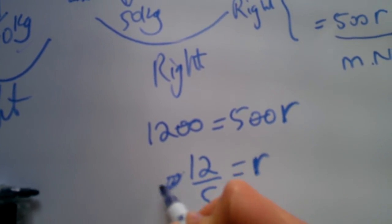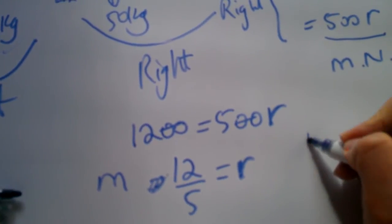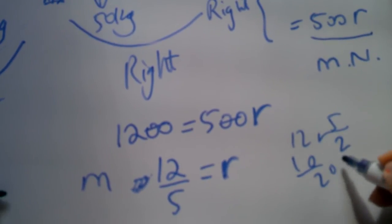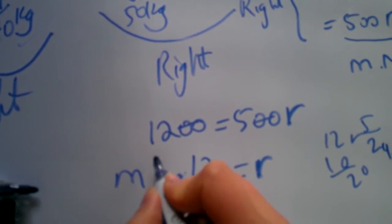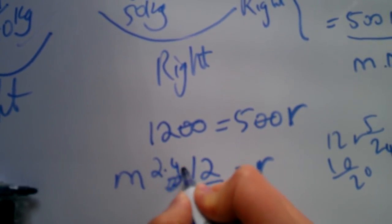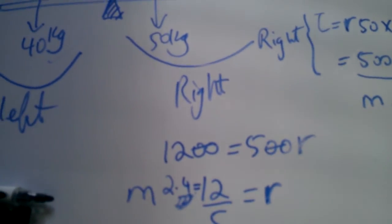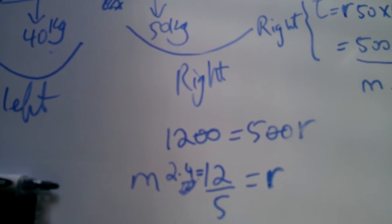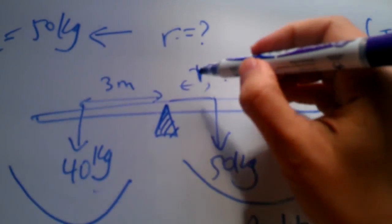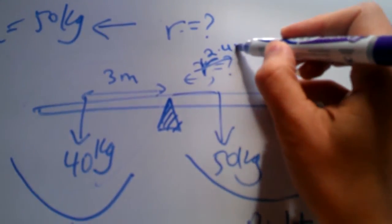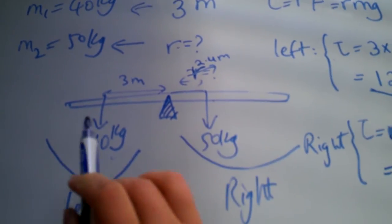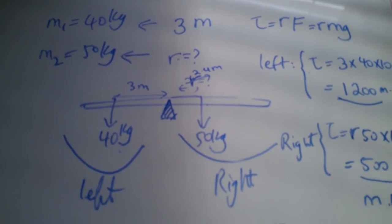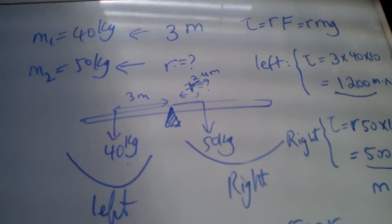That gives us 2.4 or something. So this is 2.4 meters. The other kid, so 12 if you divide it by 5, you're going to get 2.4 meters. So this kid has to be sitting at 2.4 meters away from the pivot point such that the seesaw actually is balanced. So these are typical questions about torques and angular accelerations.